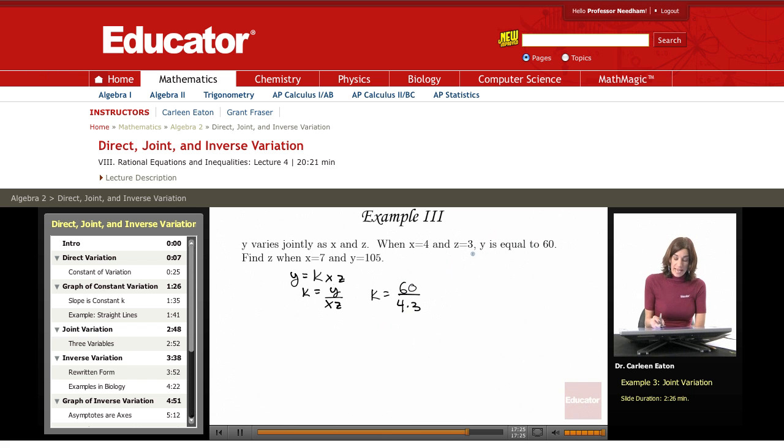Okay, now I'm also asked to find z given these other two values. So I know that k equals, in the second scenario, y is 105, x is 7, and the unknown is z.